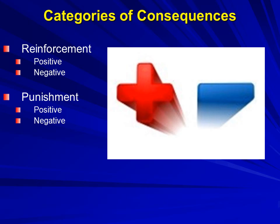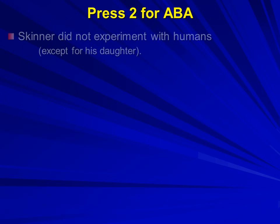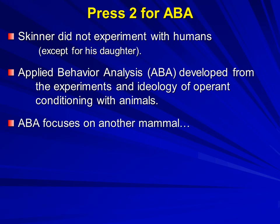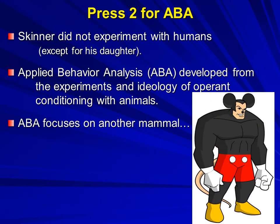And be aware that these consequences apply to all mammals. The principles came about from Dr. Skinner's experiments with pigeons and lab rats. He didn't work with human beings, except with regards to his daughter when she was an infant. You can do a search on the internet — choose a reliable site, not one of those wacky rumor-starting ones. His daughter turned out just fine. But yes, ABA applies to another mammal: us.